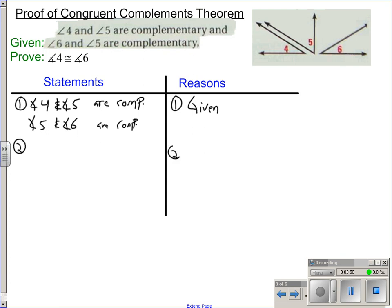For the second statement, the whole idea of these proofs is that you are using the given information, the picture, anything that you know, other theorems, other definitions, postulates, whatever, to start making new statements. So, angles 4 and 5 are complementary. That was the first statement in the given. What does that mean for them to be complementary? It means that if you add up angle 4 and angle 5, it equals 90.